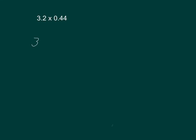Here's another problem: 3 and 2 tenths times 44 hundredths. That's 32 tenths times 44 hundredths. Tenths times hundredths gives us thousandths. And then we've got 32 times 44.